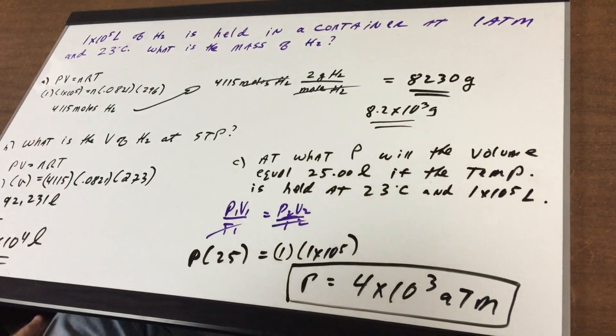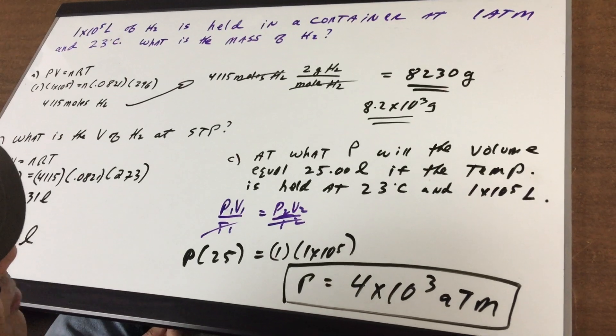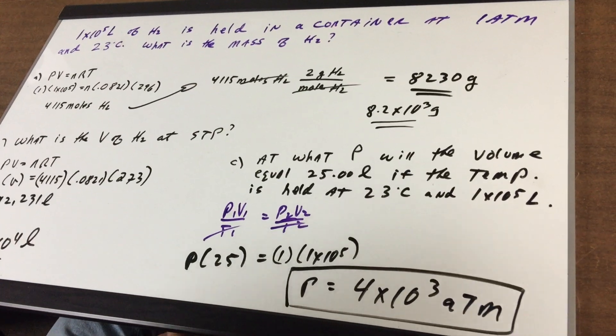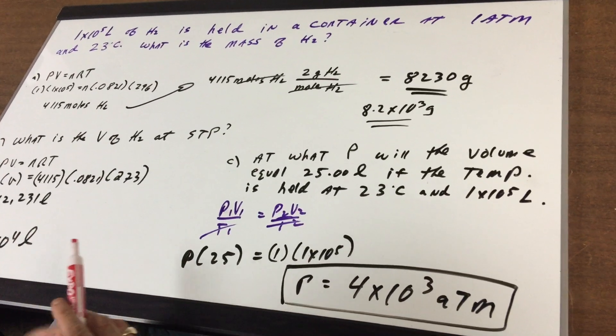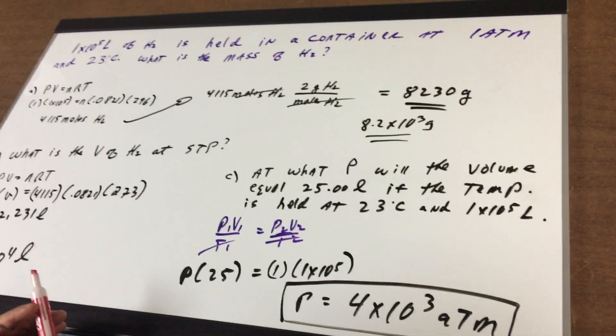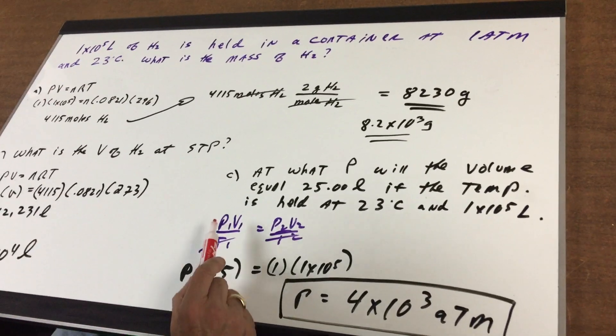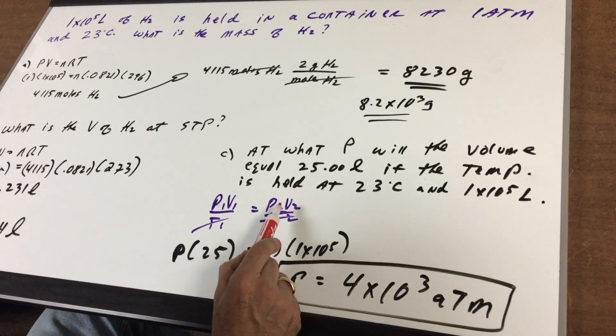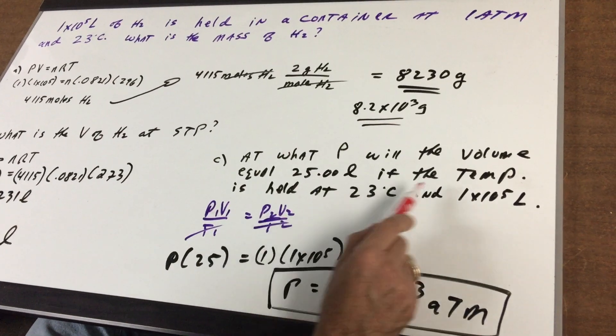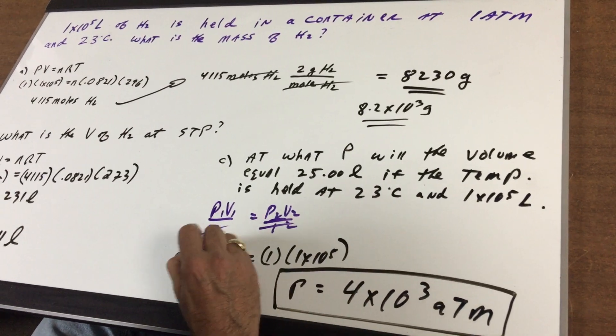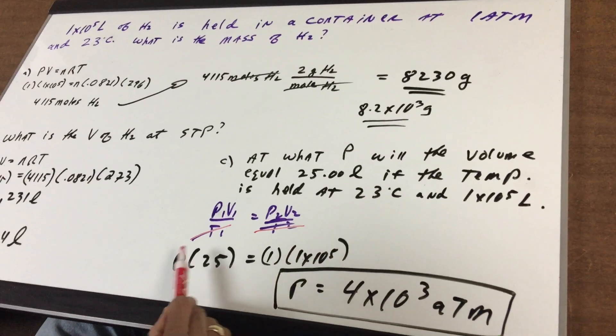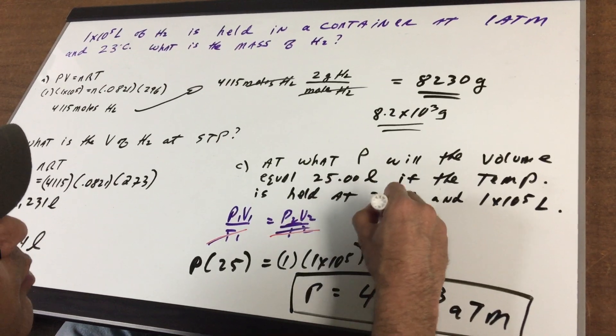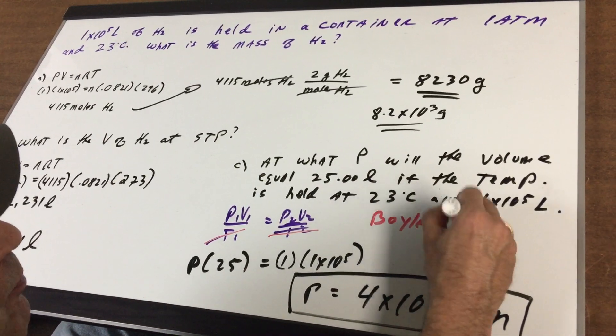Part C. At what pressure will the volume equal 25 liters if the temperature is held at 23 Celsius and 1 to the fifth liters? Well, any time you get a problem, and this is a guaranteed DAT question involving pressures and temperatures and volumes, you're going to say P1 V1 over T1 equals P2 V2 over T2. Now it says that the temperature is constant, meaning it's being held. So that means these cancel. So we got P1 V1 equals P2 V2. I hope you recognize P1 V1 equals P2 V2 as Boyle's Law. This is Boyle's Law. And we plug in.